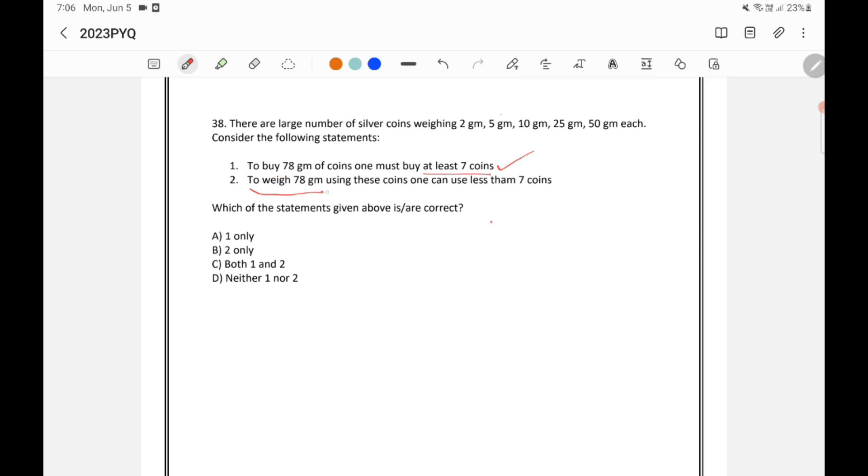Now if you look at the second statement, it is saying that to weigh 78 gram using these coins, one can use less than 7 coins. Let's see how we can do that. Let's say that I have a weighing machine, a weighing balance like this. I need to weigh 78 gram. So let's assume that I have a thing here and it is weighing 78 gram. Let's say that I have put 50 gram coin here and 25 gram coin here and 5 gram coin here. So total using these 3 coins it is 80. So this is now 80 gram. Now if I put a 2 gram coin on this side, so here total 80 gram is there and if I am adding 2 gram on this side, so total will become 80 minus 2, 78.